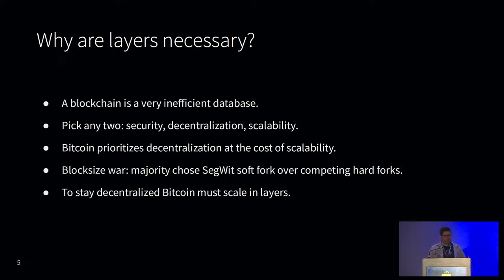Since censorship resistance is so important, Bitcoin prioritizes decentralization over scalability. This was cemented in the 2017 block-size war, when node-runners successfully defended Bitcoin's decentralization from the cartel of miners and corporations who were trying to hard fork to increase the block size. Even though the SegWit soft fork did afford us more block space, it is still an extremely scarce resource. As the block subsidy halves every four years, it's expected that eventually there will be consistently high fees on the base layer. So, to stay decentralized, Bitcoin must scale in layers.